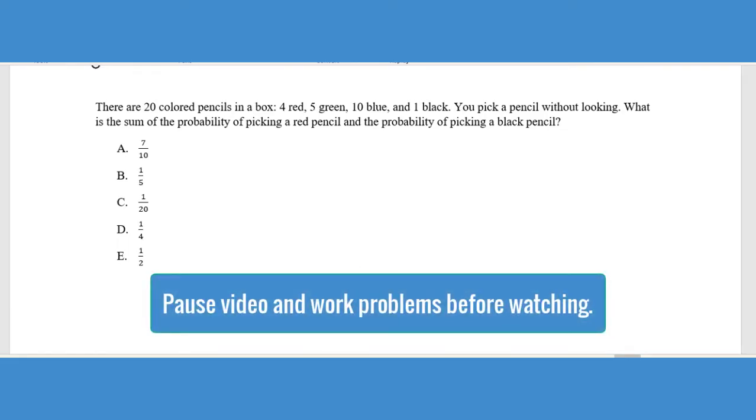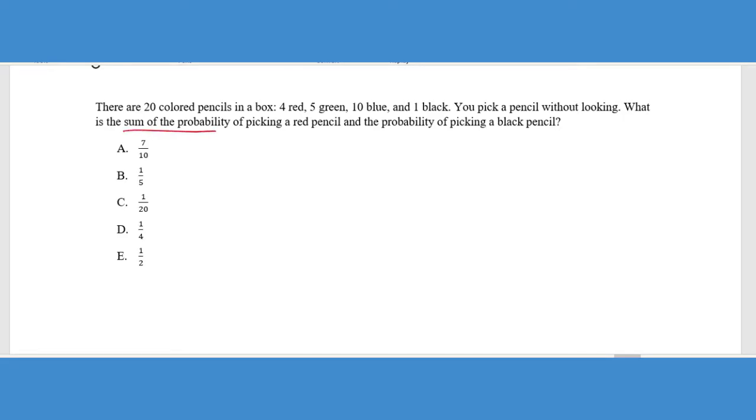This first question is kind of standard to what you would see, but it's got a little extra in it. It says there are 20 colored pencils in a box: 4 red, 5 green, 10 blue, and 1 black. You pick a pencil without looking. What is the sum of the probability of picking a red pencil and then picking a black pencil? So a few things here can be tricky. First, it says the sum of the probability. We need to figure out the probability of just picking a red pencil. There are 4 red pencils out of a total of 20. The probability of picking a black pencil is 1 out of 20.